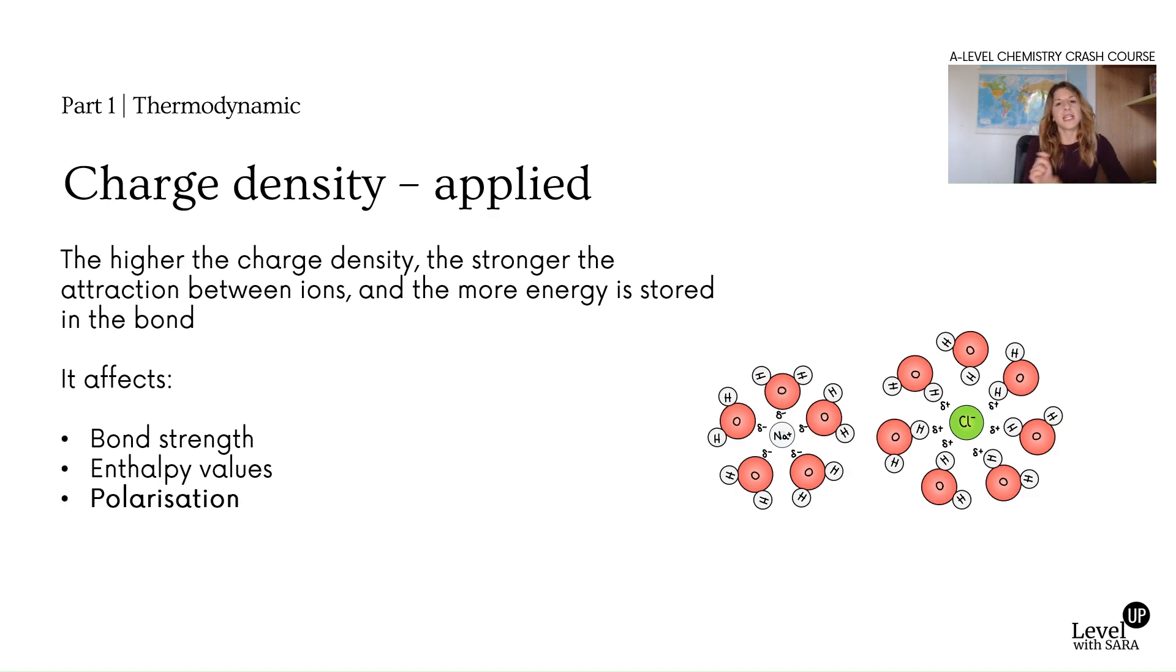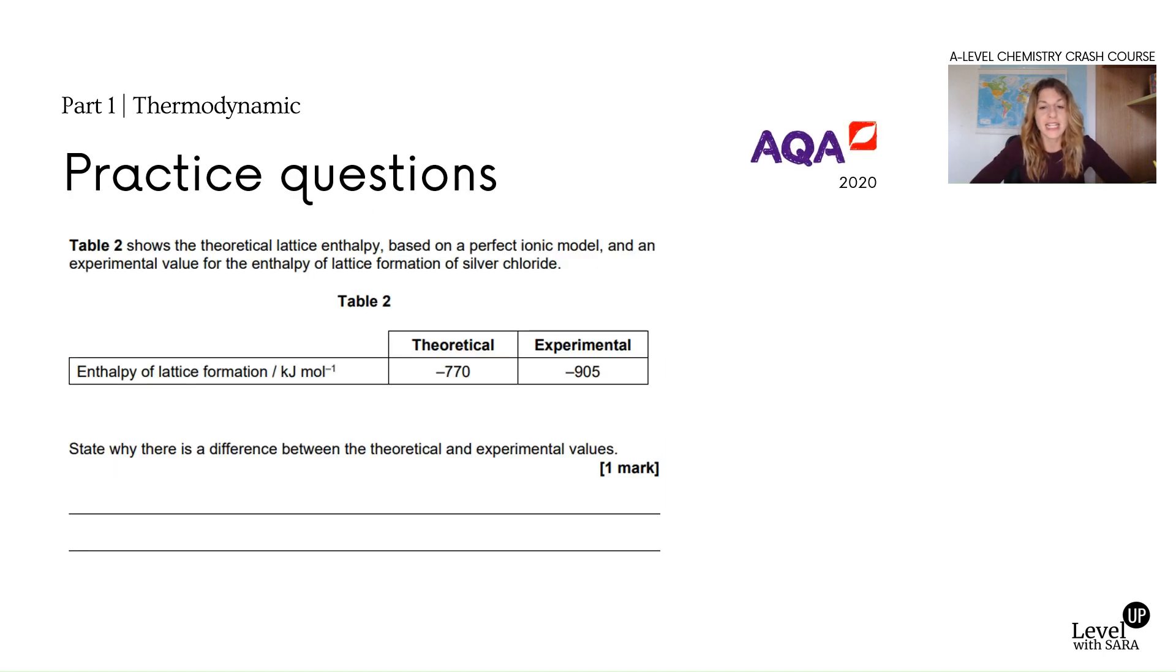Second part, another application of the charge density, is polarization. If the charge density is very high, we cannot just think about two spheres that perfectly attract. There is going to be some distortion, what is called the covalent character. This distorts the bond and this is an important concept for remembering group two trends between group two hydroxide and carbonate, the solubility and thermal stability. I have videos about that, so go to my YouTube channel to check. This distortion weakens the bond. The other concept is applied to differences you've seen in questions between theoretical and experimental values.